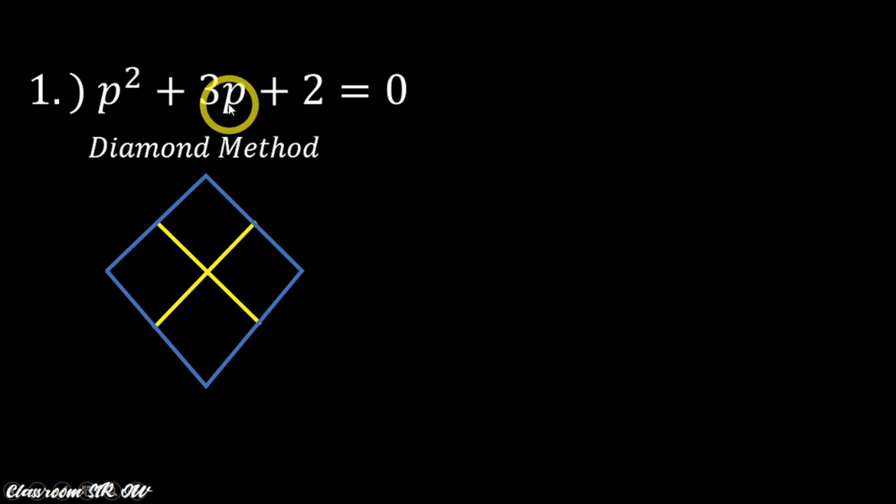What you are going to do is we write the coefficient of the middle term, which is 3, in the upper part of our diamond. Now in the lower part of our diamond, we will write the constant term in the bottom, which is 2.